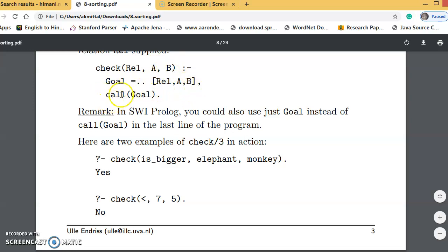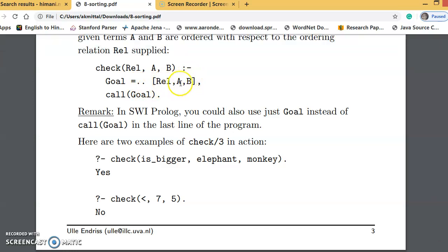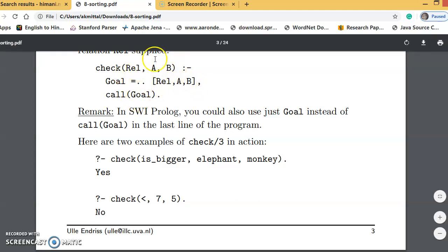What will happen when the goal function is called? This whole list is executed on the prompt and the relation between A and B, true or false value, will be evaluated. If A is related to B, suppose this is less than, so A is less than B, then true will be returned. If A is not less than B, then false will be returned. This is how this check function is going to work.